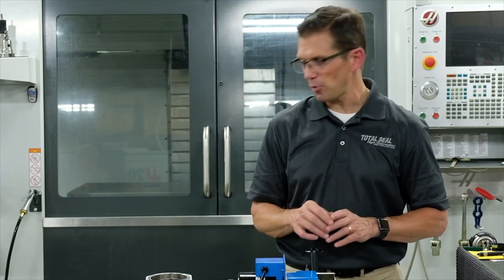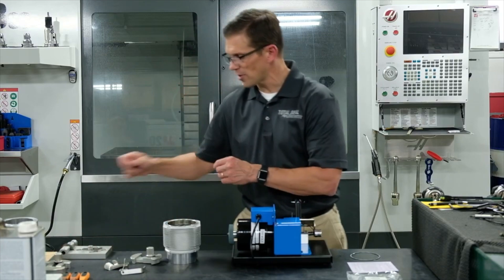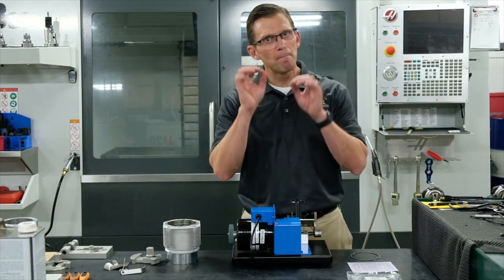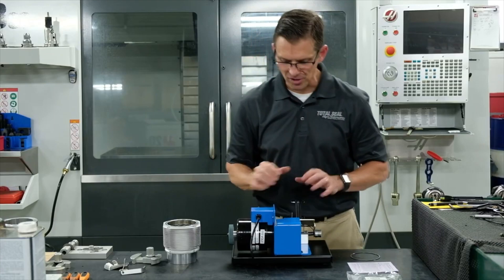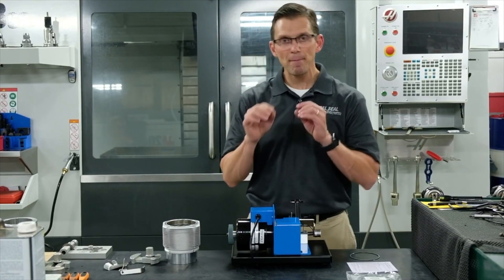And to create more ring end gap, that's where a ring filer comes into play. Many people have seen or used the old school tools that are the manual hand grind. Today we have modern, better tools that are more precision. This power ring filer is made by Total Seal.